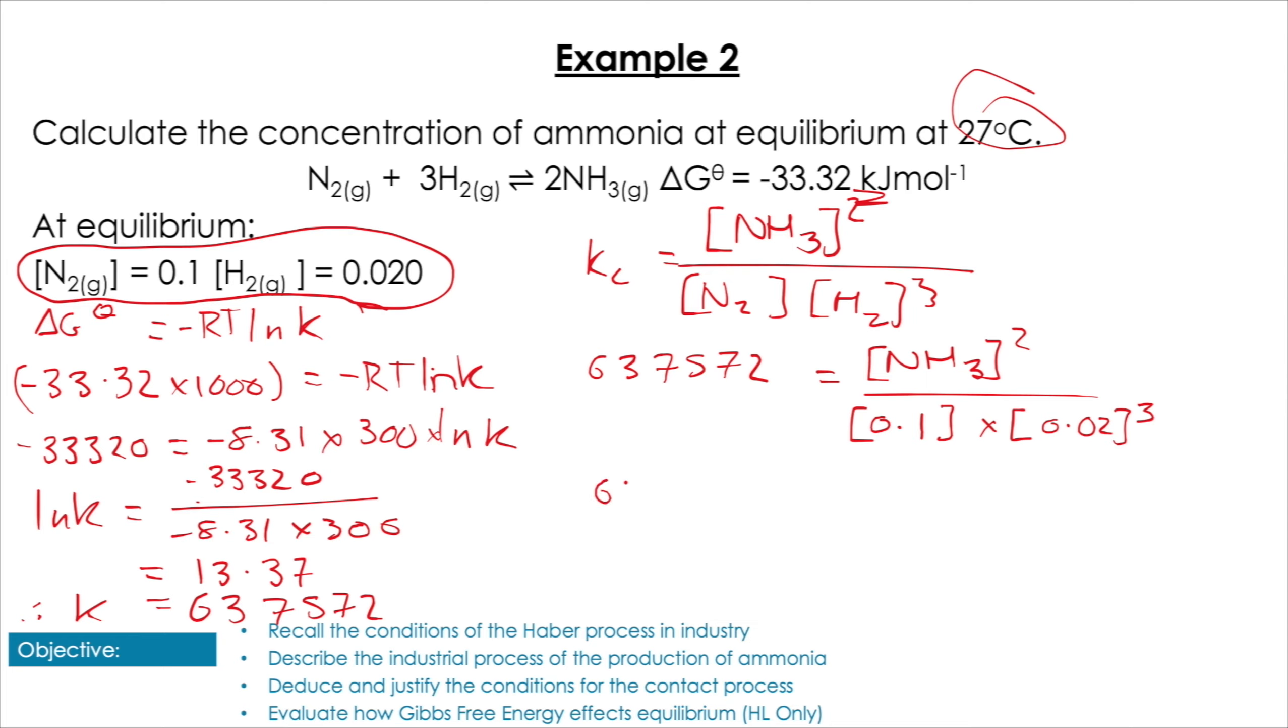So I'm going to do 637,572 × 0.1 × 0.02³—all squared—equals NH3. I'm not even going to write the squared in. I'm just going to go straight for square rooting that entire calculation there, which is going to give me an NH3 concentration of 0.71 moles per decimeter cubed.